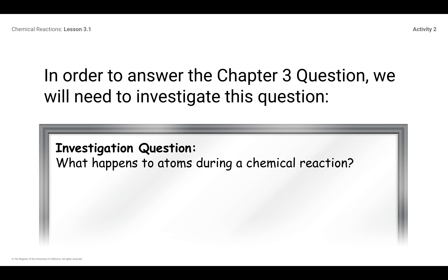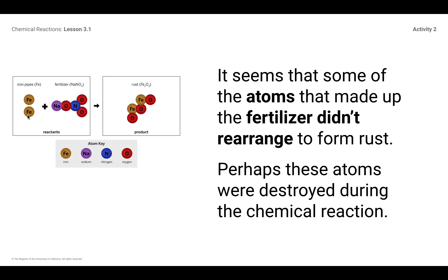In order to answer the Chapter 3 question, we have to investigate: what happens to atoms during chemical reactions? You guys know that their bonds break apart and they rearrange. You also know, because I gave you the key concepts from this unit, that we have what's called conservation of matter. All of the atoms in the reactants have to show up in the products. So it seems like some of the atoms that made up the fertilizer didn't rearrange to form the rust — we've got some sodium and nitrogen. Where did those go? You know they have to form something else.